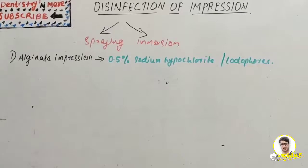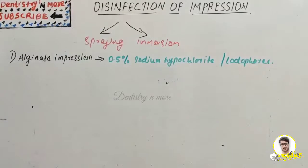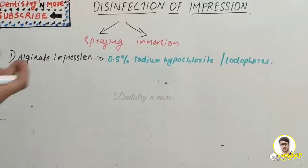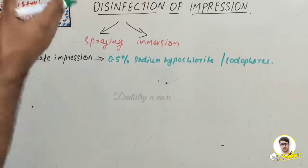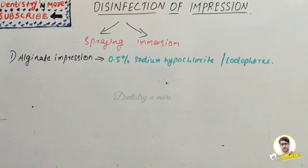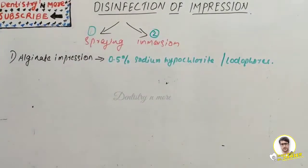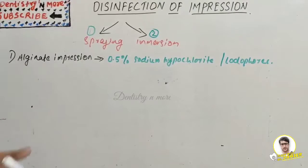Hello everyone, welcome back to another session in Dentistry and More. Today we have a small topic from prosthodontics: disinfection of impressions. We have many types — alginate impression, impression compound, and zinc oxide eugenol impression for secondary impression. We are going to learn how to disinfect them. Commonly we have two methods: spraying and immersing, and in both methods we use certain disinfectants.